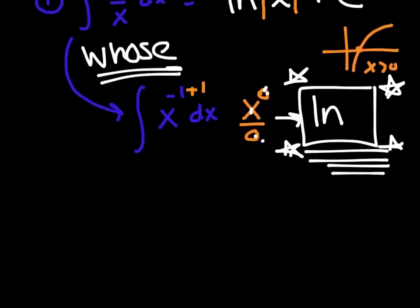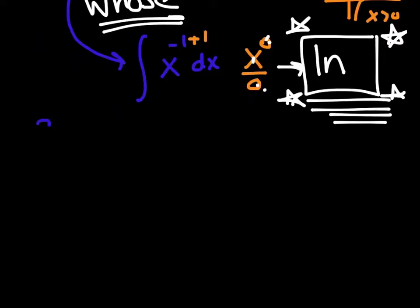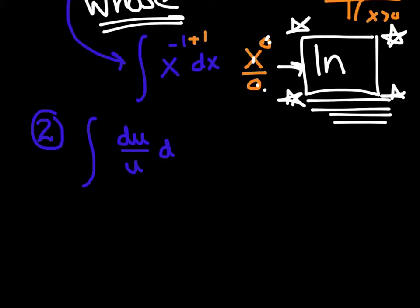Now let's make the general rule, just like for derivatives we said du over u. The general rule for ln integrals: if you have the integral of du over u, that equals the ln of the absolute value of u plus c.